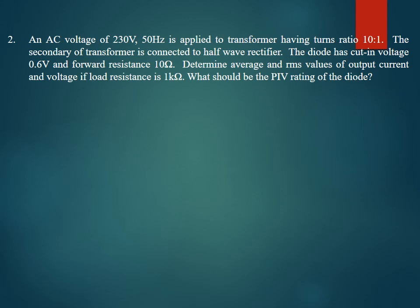The second problem involves an AC voltage of 230 volts applied across the primary of a transformer with a 50 Hz frequency and a turns ratio of 10:1. The secondary is connected to a half-wave rectifier. The diode has a cut-in voltage of 0.6 volts and a forward resistance of 10 ohms. We need to determine the RMS output current, voltage, and the peak inverse voltage (PIV) rating of the diode, given RL = 1 kΩ.